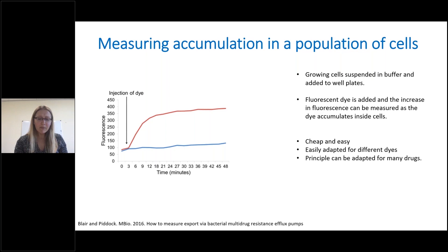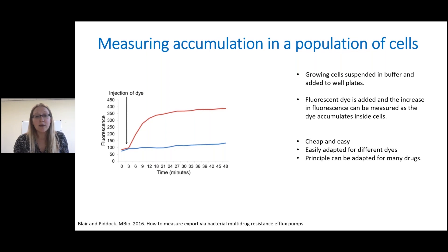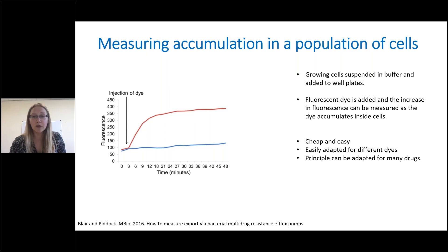You have a culture of growing cells, washed and suspended in buffer, put in well plates, and then we can measure in a plate reader the fluorescence. We inject the dye at the start and measure the increase in fluorescence as the compound accumulates within the cell. You can see that one strain accumulates far less than the other. Advantages of this method include that it's cheap and easy, easily adaptable for different dyes or compounds, and can be used to measure accumulation of some drugs, including with alterations to measure fluoroquinolones and other detectable drugs.